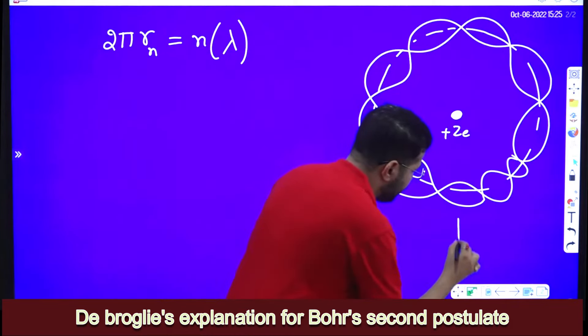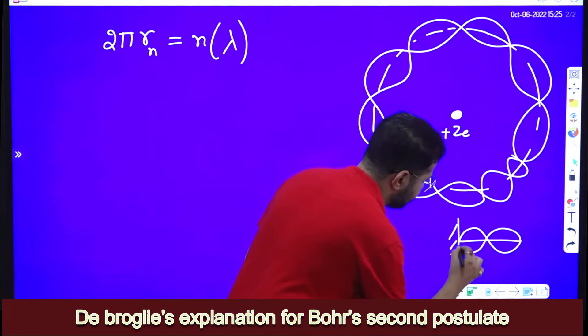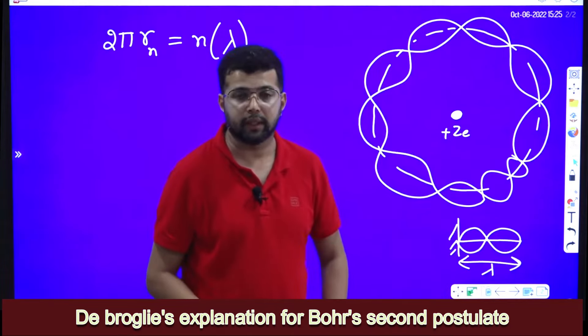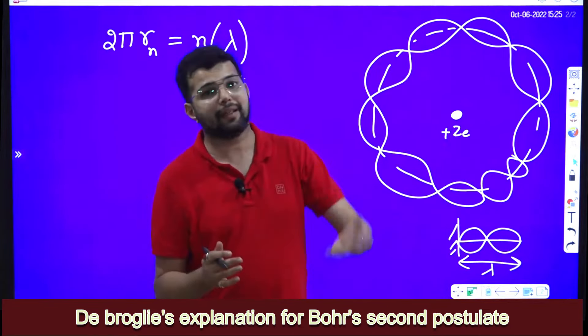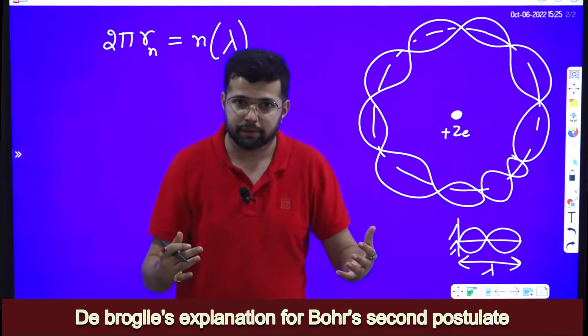Because we have seen, say if this is a stationary wave, what is length of this? Length of this is lambda. If the length is other than lambda, then there will be destructive interference and the standing wave pattern will collapse.